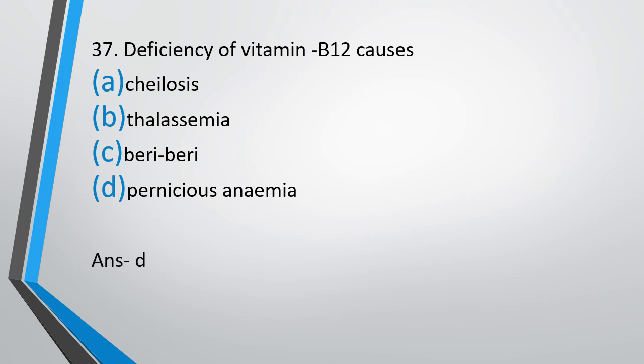Pernicious anemia is a type of megaloblastic anemia. Vitamin B12 deficiency causes anemia because vitamin B12 is involved in DNA replication. When the cell grows in size but is not able to replicate its DNA, it stays in a large size. So when the RBCs are large because the DNA was not replicated and the cell could not divide, it results in megaloblastic anemia, and the number of RBCs decreases, causing anemia.